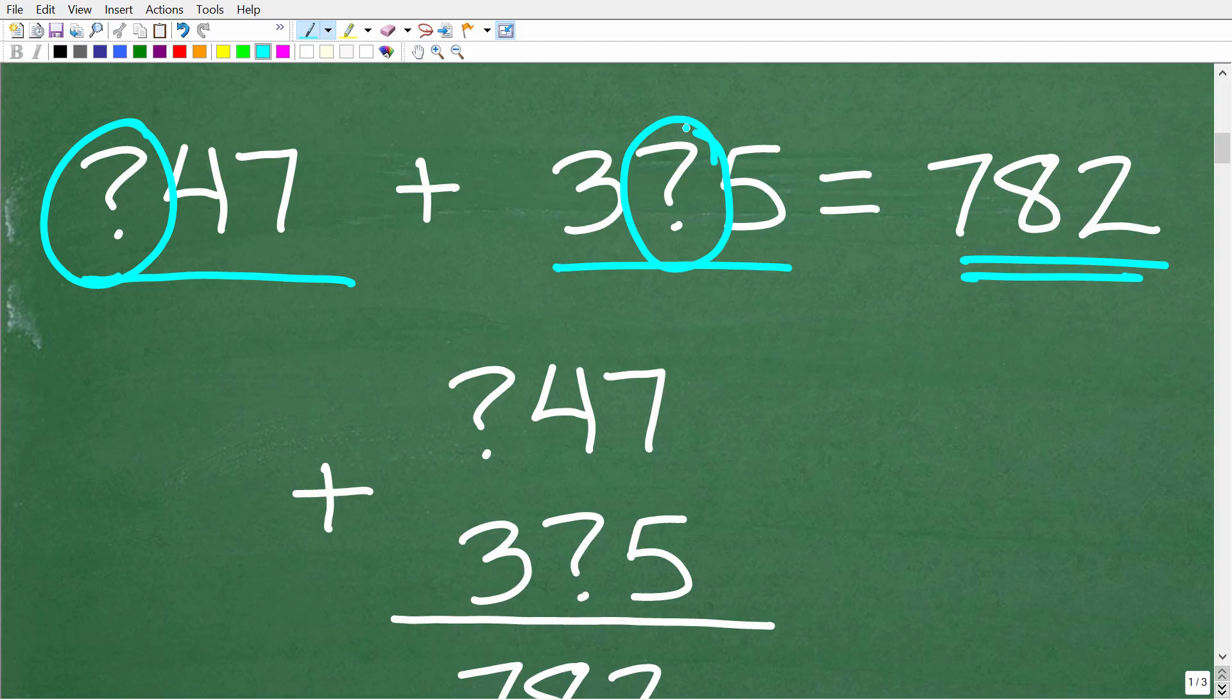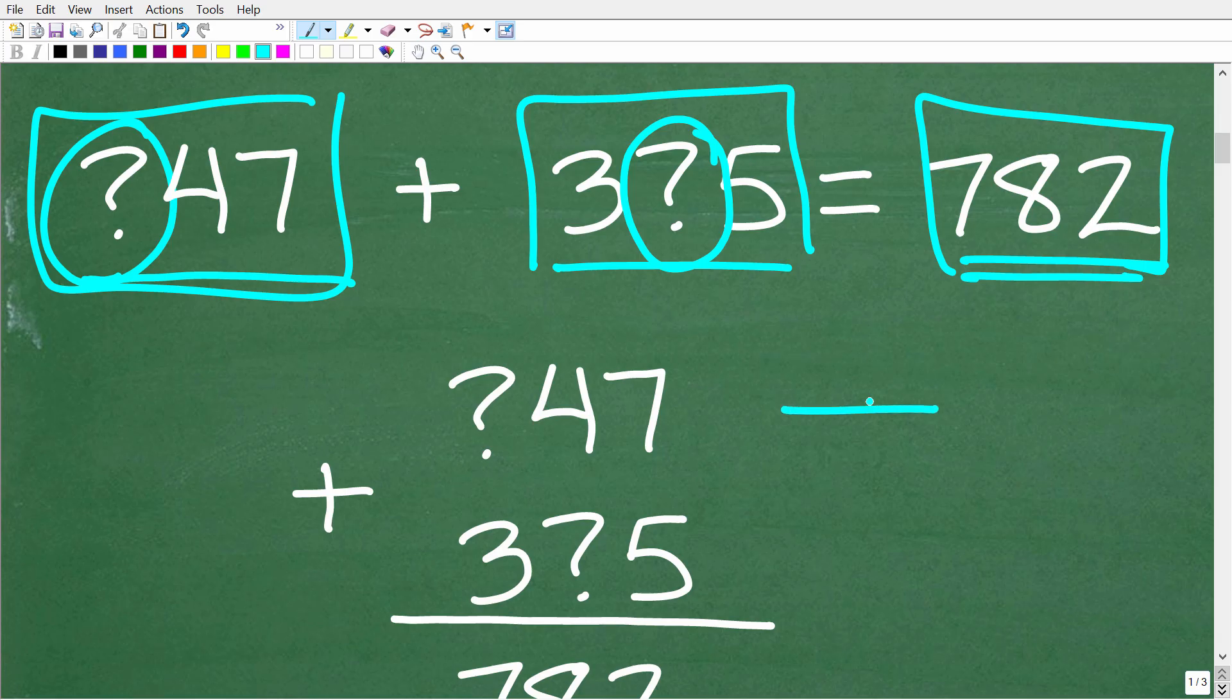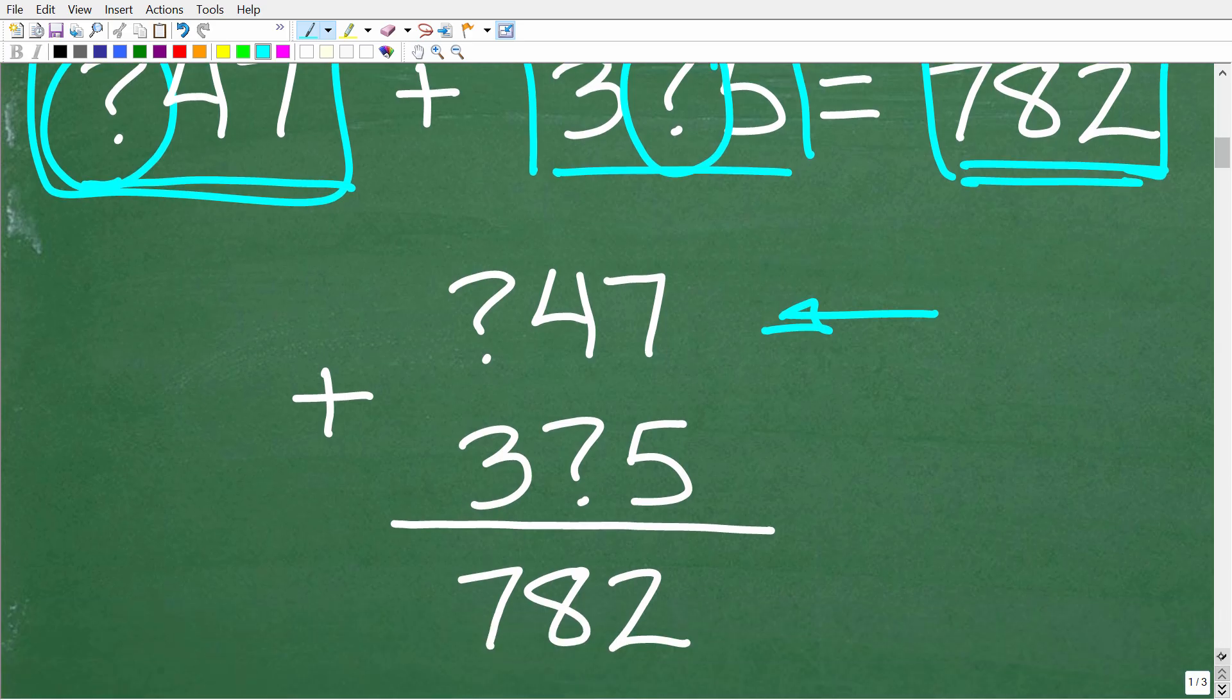So what we can do here is write the question in a different way. We have this number plus this number and we know the answer is 782. So we can write it this way. We have question mark 47 plus 3 question mark 5 and we know the answer is 782. All right, so we're going to have to go back and do some review of basic mathematics, basic addition.